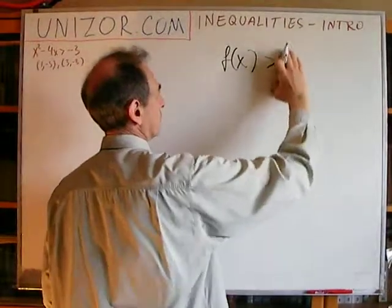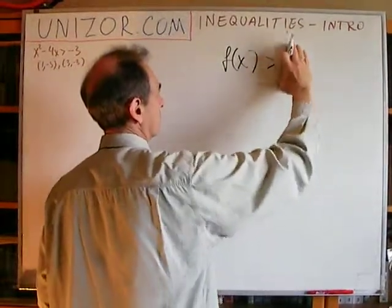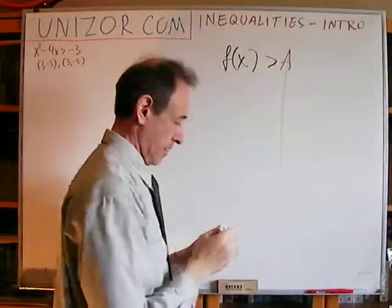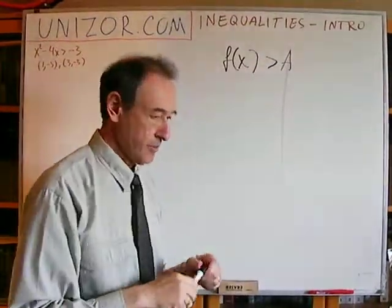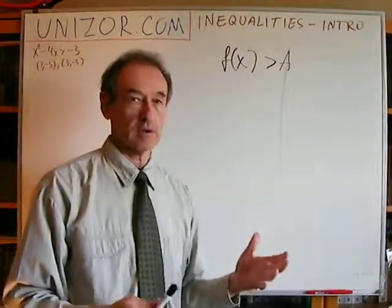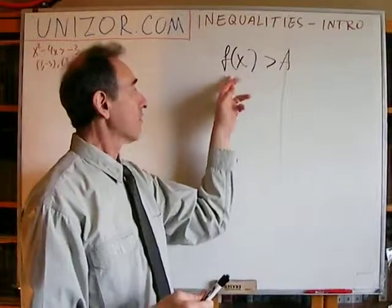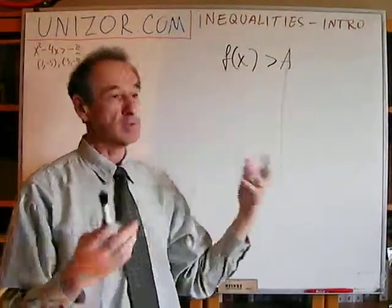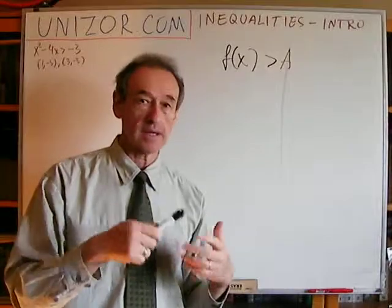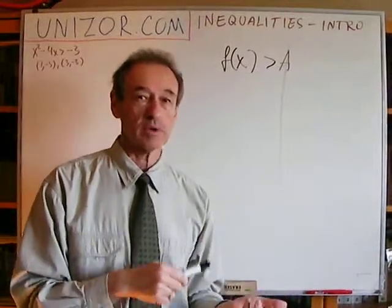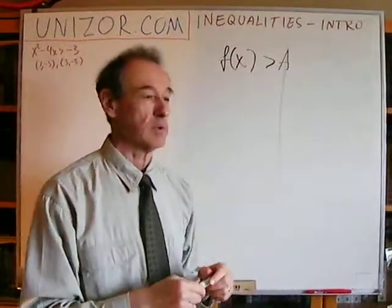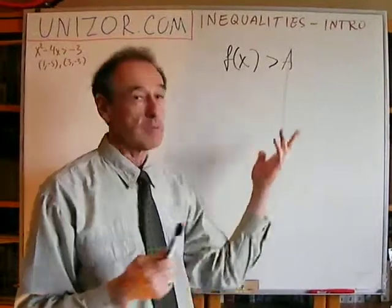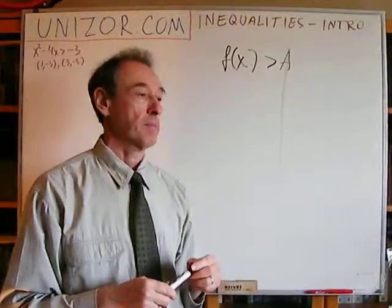It's a condition on a function that the values of this function are supposed to be — in this case, greater. It might actually be less than, or less than or equal, or greater than or equal. And some constant on the right.